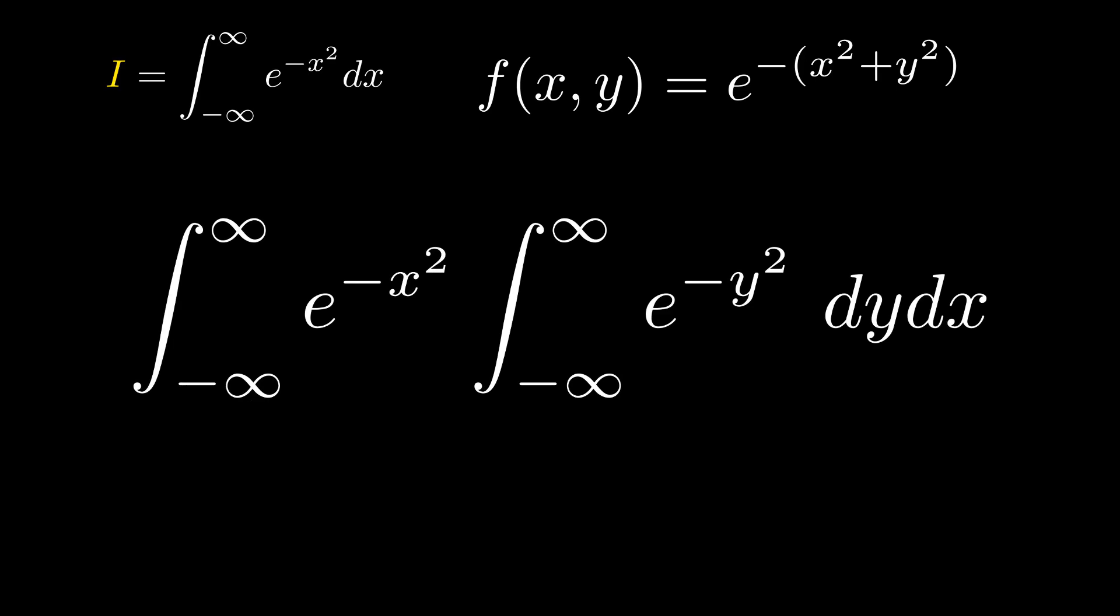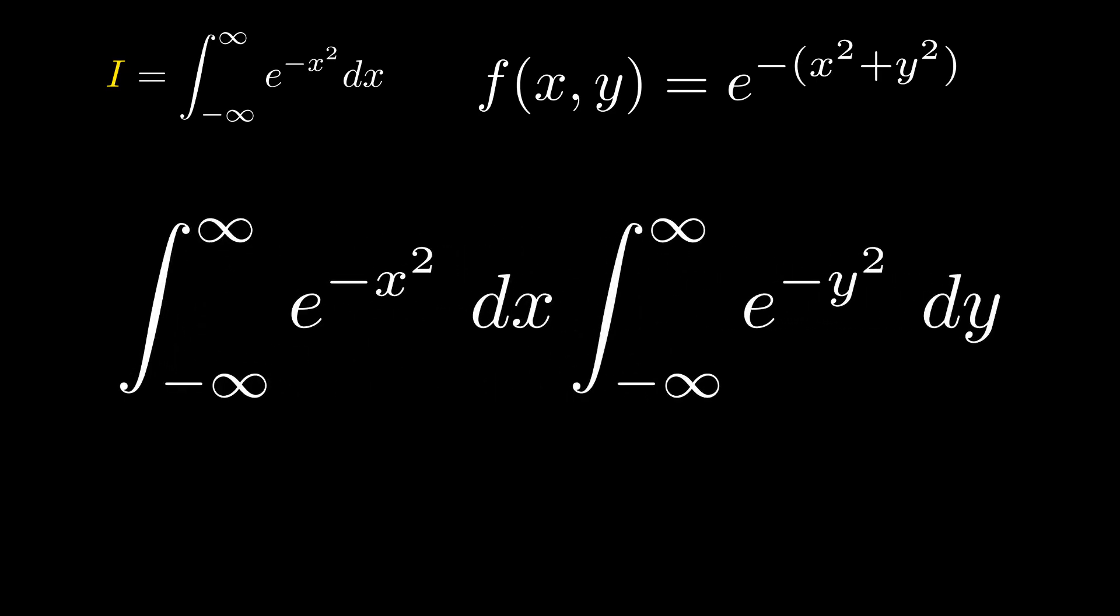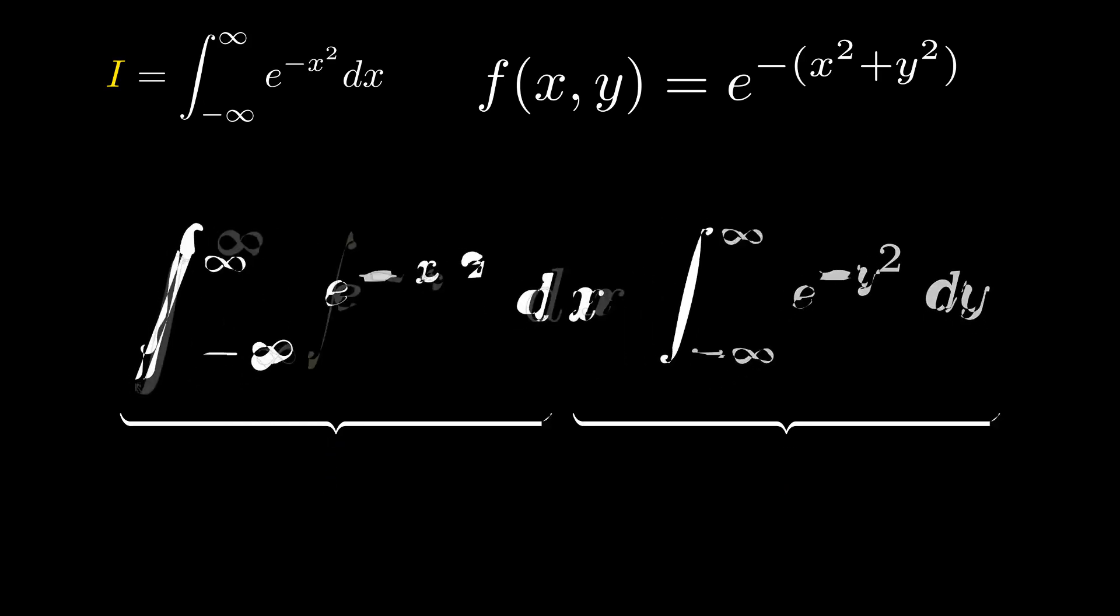Similarly, since we are integrating over x, the integral of e to the negative y squared from negative infinity to infinity is a constant and can be pulled out. Now, this integral is equal to i, and in fact, this integral is also equal to i, since the variable name does not affect the value of the integral. So, the double integral is equal to i squared.